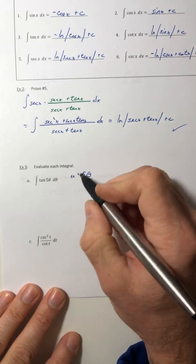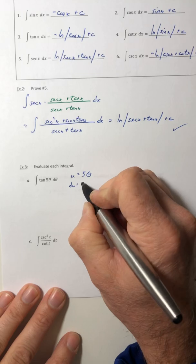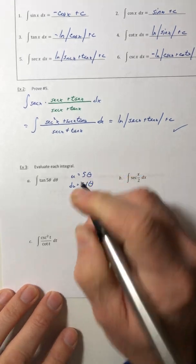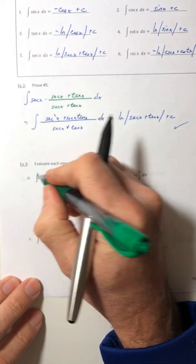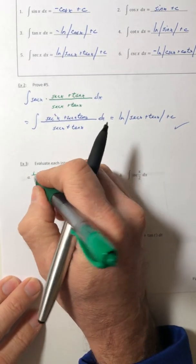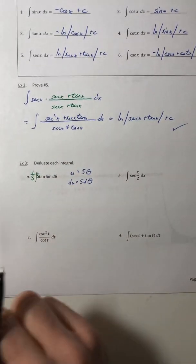So we'll let u equal five theta. So the du would be five d theta. So that means I now need a five on the inside. And you guessed it, a one fifth on the outside.